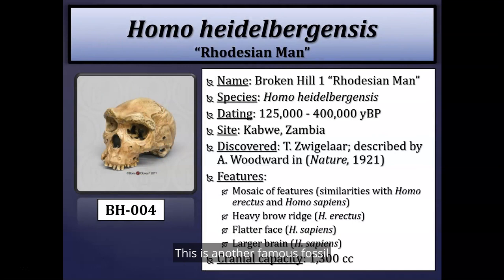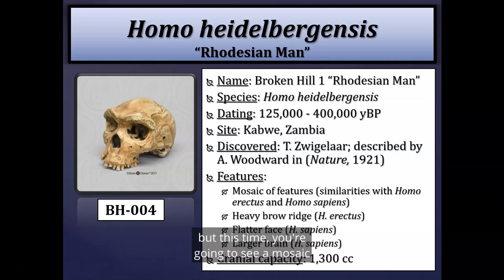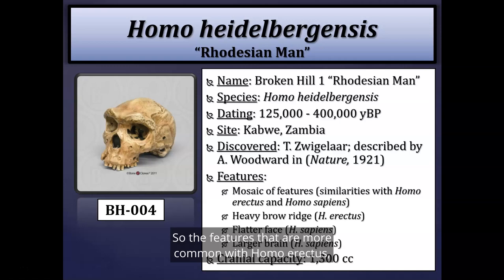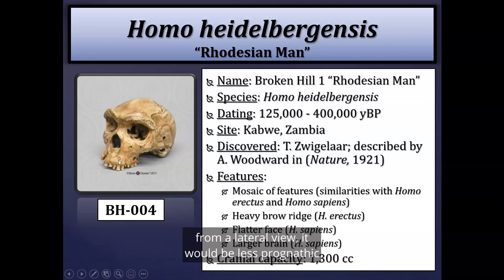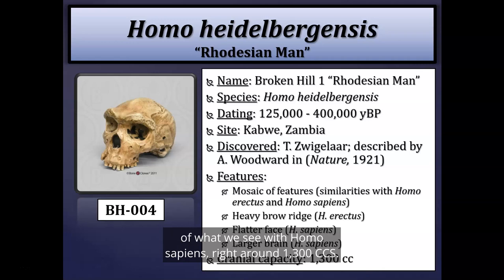Another famous fossil attributed to Homo heidelbergensis is Broken Hill 1, or Rhodesian Man, dating about 125,000 to 400,000 years before present, uncovered in Zambia, Africa. This fossil shows a mosaic between Homo erectus and Homo sapiens features: the really pronounced double-arched brow ridge is shared with Homo erectus, while a less prognathic, flatter face and a relatively larger brain size of around 1,300 cc — almost within the range of Homo sapiens — are more modern features.